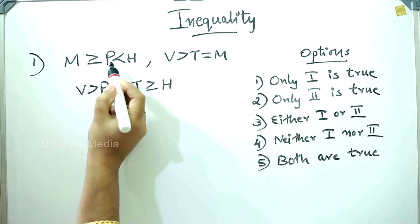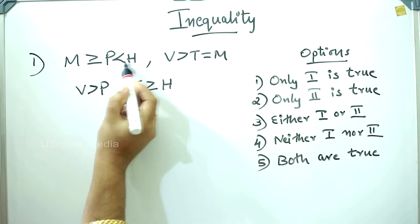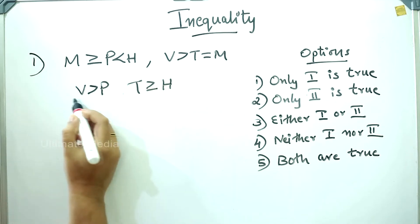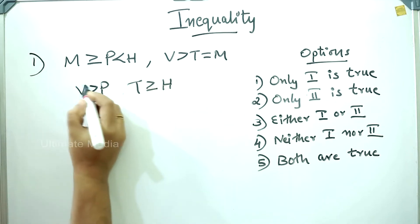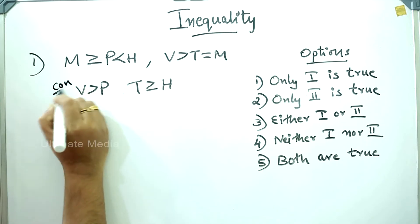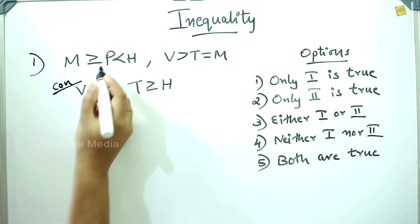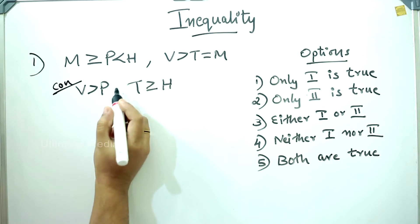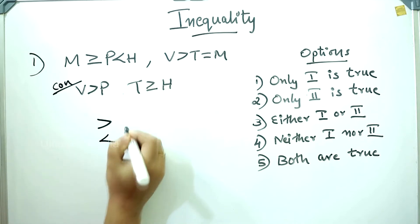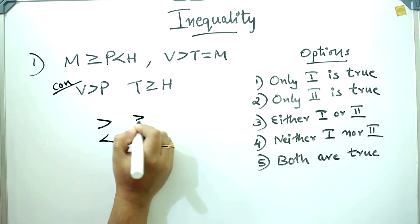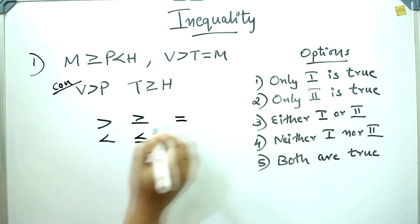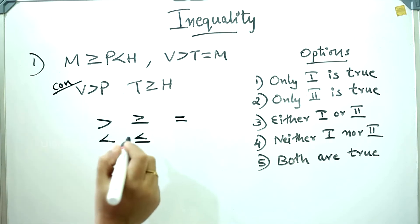M is greater than or equal to P, less than H. This is the statement. This is the solution and the conclusion. In this case, the symbols are: greater than, less than, greater than or equal to, less than or equal to, and equal to. We will ask you about inequality.